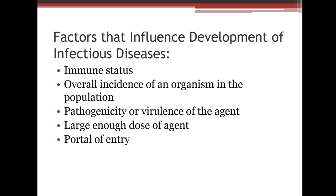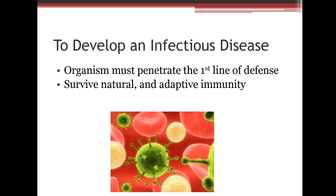In order to develop an infectious disease, the organism must first penetrate the first line of defense — think mucous membranes, unbroken skin, and lysozyme in saliva and tears. They also have to survive both innate and adaptive immunity in order to take over.